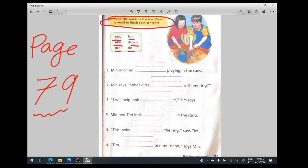Let's read our instructions. We will read the words in the book, then we will write a word to finish each sentence. Everyone get ready and bring your phonics book and open page 79. Let's begin.